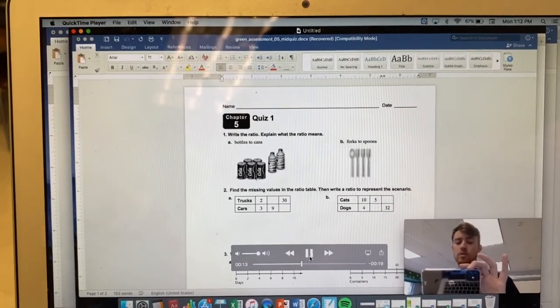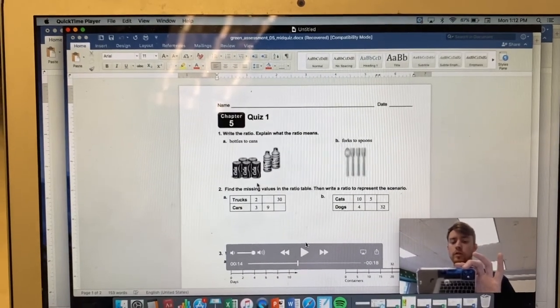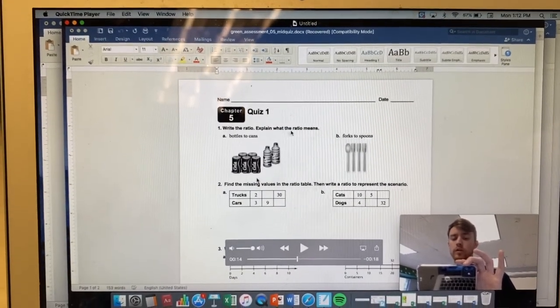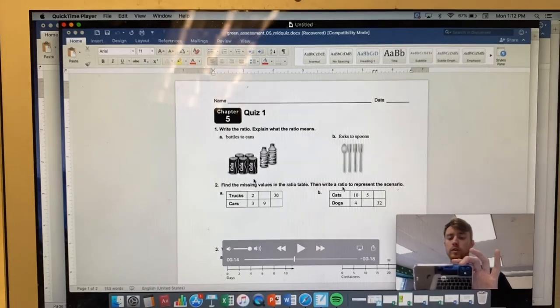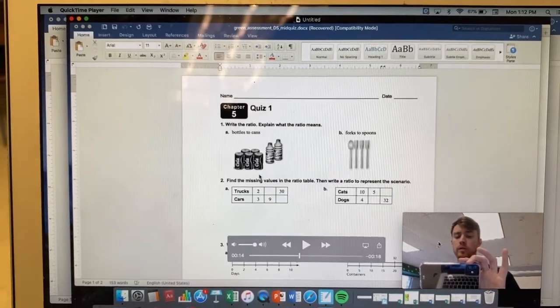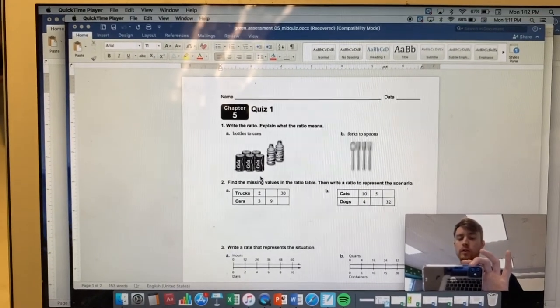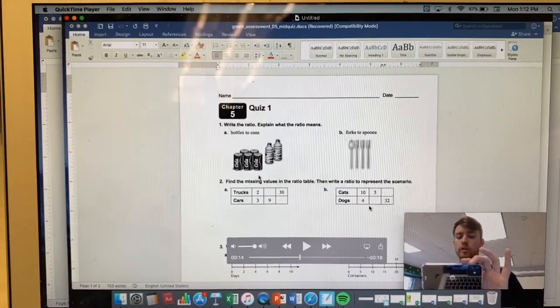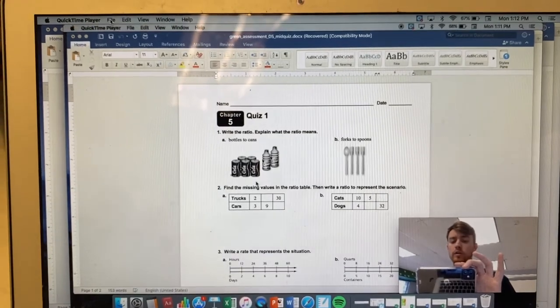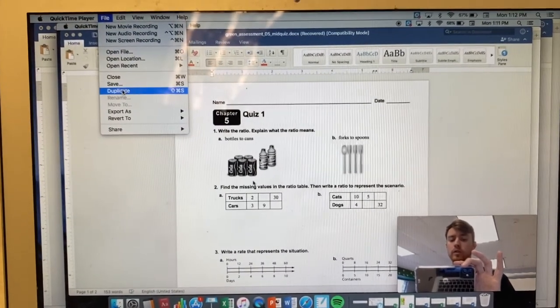I now have a screen recording where I'm showing them something on my computer, and I also have my image down at the bottom in case I wanted to have my picture on as well. To save this, you can go to file and you can go to save, or